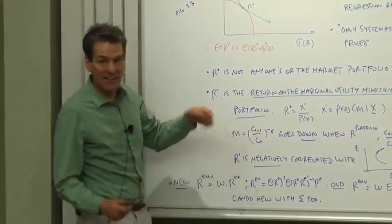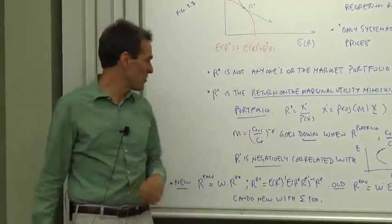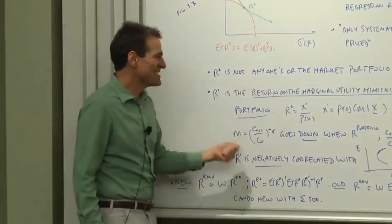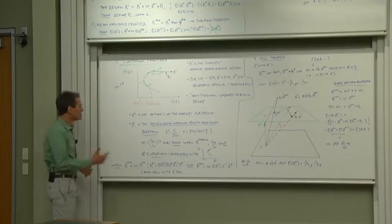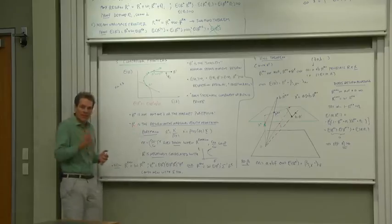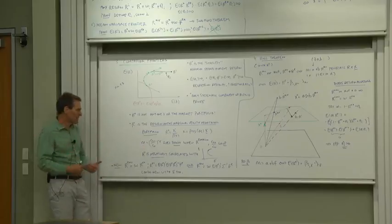The discount factor is negatively correlated with the returns you might hold in your portfolio. R star is negatively correlated with returns on the top half of the frontier. So R star, it's a portfolio that carries pricing information. It's a portfolio that measures marginal utility, but it's not a portfolio that anybody holds.